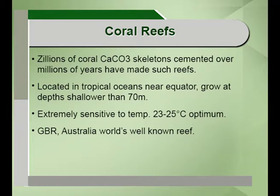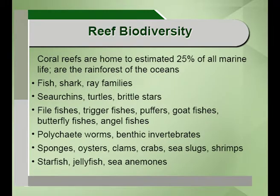Zillions of coral calcium carbonate skeletons cemented over the years form these reefs. They are located in tropical oceans near the equator and grow at depths shallower than 70 meters. They are extremely sensitive to temperature, requiring an optimum of 23 to 25 degrees centigrade. The Great Barrier Reef of Australia is one of the world's best known reefs. Coral reefs are home to an estimated 25 percent of marine life and are the rainforests of oceans, hosting fishes, sharks, rays, turtles, brittle stars and sea urchins.